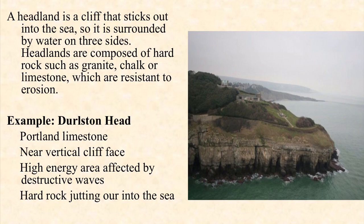So let's get started by thinking about what is a headland. A headland is a cliff that sticks out into the sea and is surrounded by water on three sides. They are generally made of hard rock or resistant rock and therefore are not easily eroded.